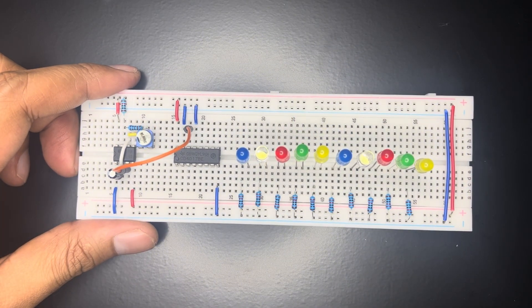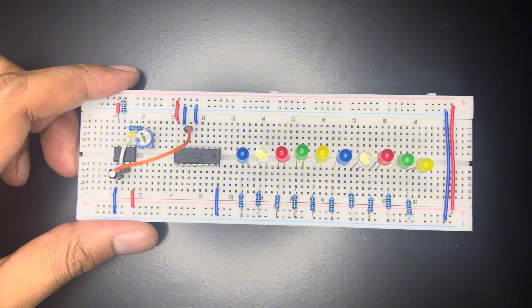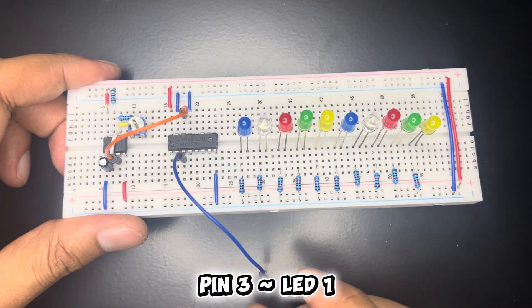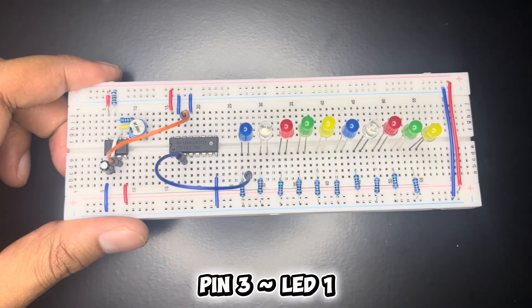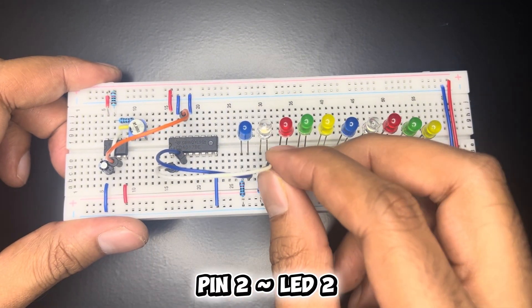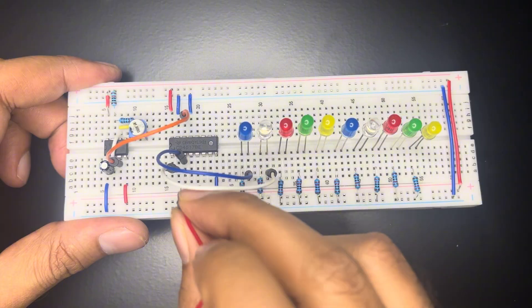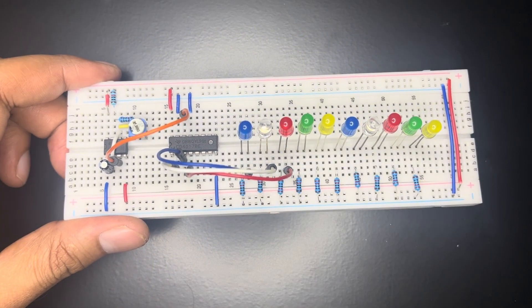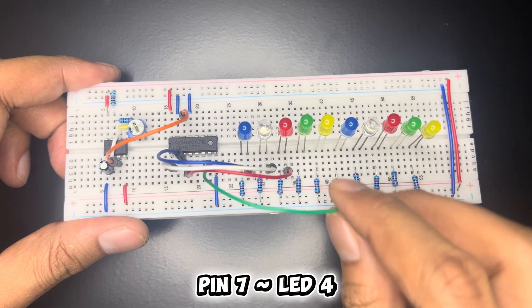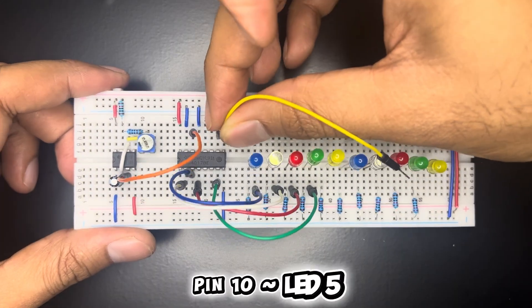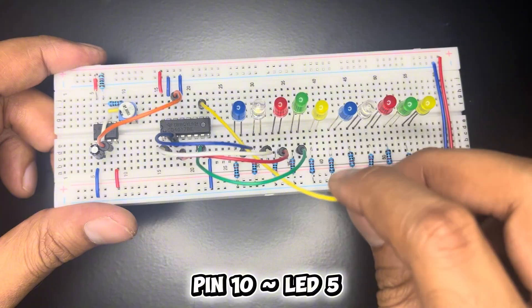Now we will connect LEDs in sequence with output pins of CD4017. Q0 is pin 3 connected to the first LED. Q1 is pin 2 connected to the second LED. Q2 is pin 4 connected to third LED. Q3 is pin 7 connected to fourth LED. Q4 is pin 10 connected to fifth LED.